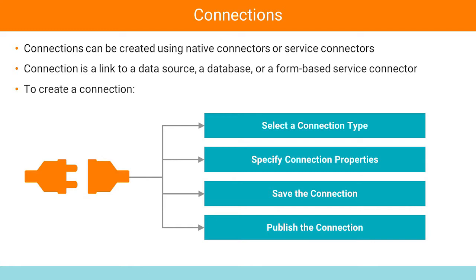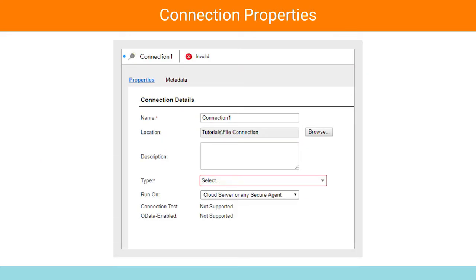To create a connection, select a connection type, specify connection properties such as name, description, and other connection parameters, then save and publish the connection. After doing this, you can now see the objects associated with the connection. The connection property window consists of several tabs, which vary depending on the type of connection you select.